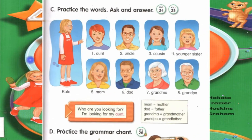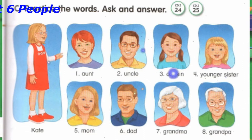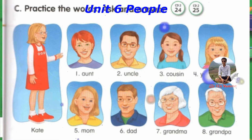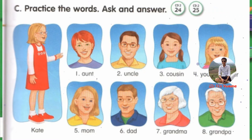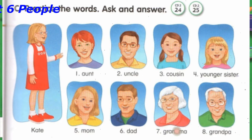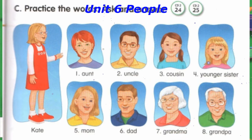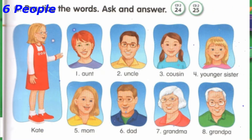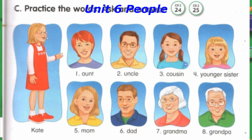Track 24, C. Practice the Words, Ask and Answer. Number 1: Aunt. Number 2: Uncle. Number 3: Cousin. Number 4: Younger Sister.